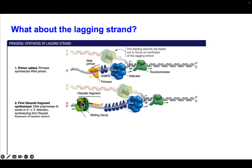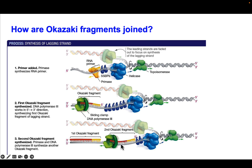It's going to build a short fragment. A researcher named Okazaki helped figure out that these short little fragments were made, so this is called an Okazaki fragment — this little bit of DNA that's made on the lagging strand in the 5 prime to 3 prime direction. Here's the first Okazaki fragment being made, and then you basically stop because the replication fork bubble is still wound up further along.